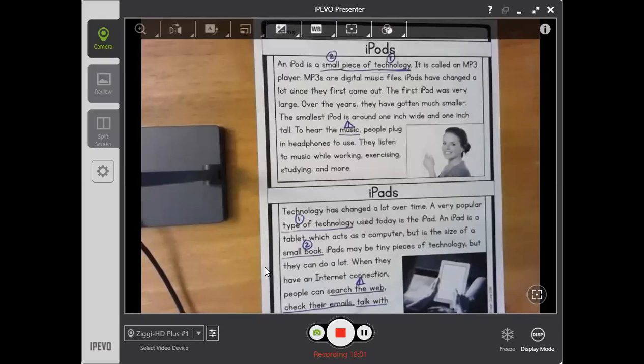An iPod is a small piece of technology. It is called an MP3 player. MP3s are digital music files. iPods have changed a lot since they first came out. The first iPod was very large.